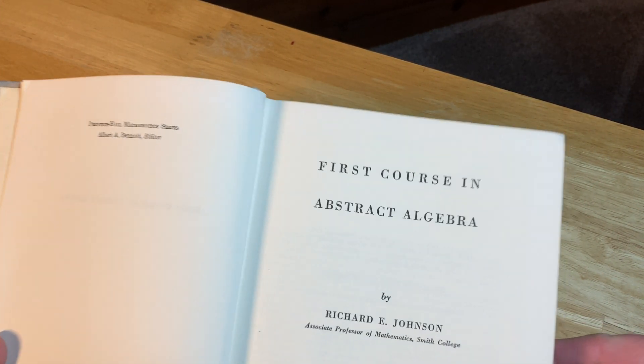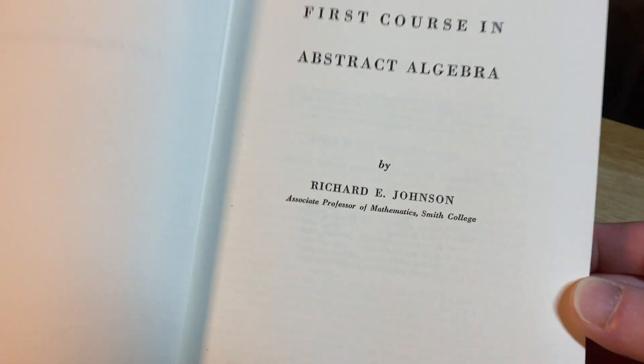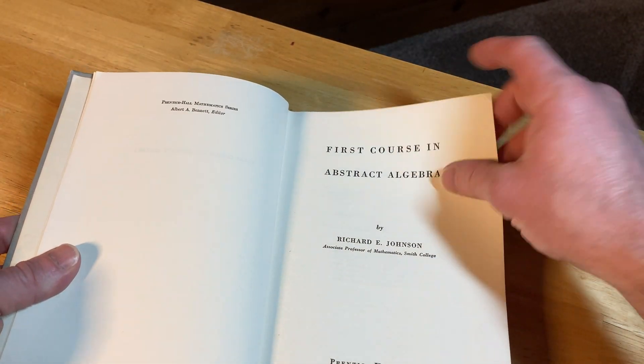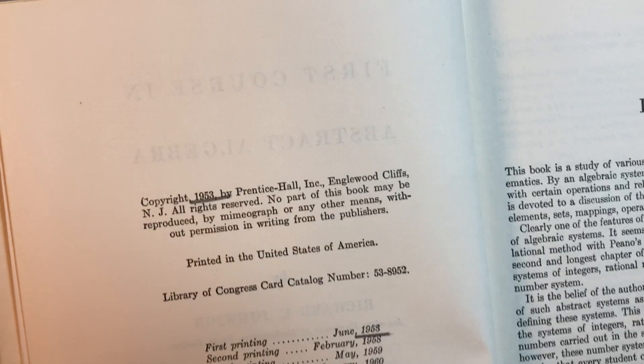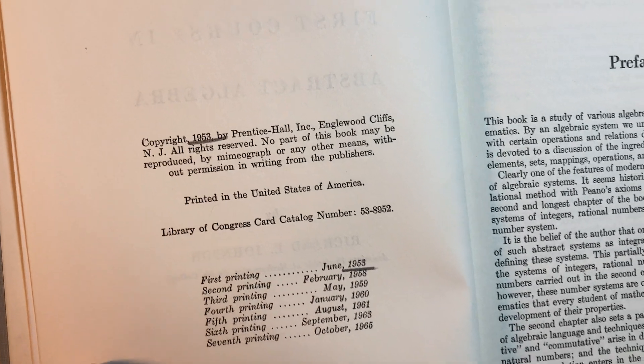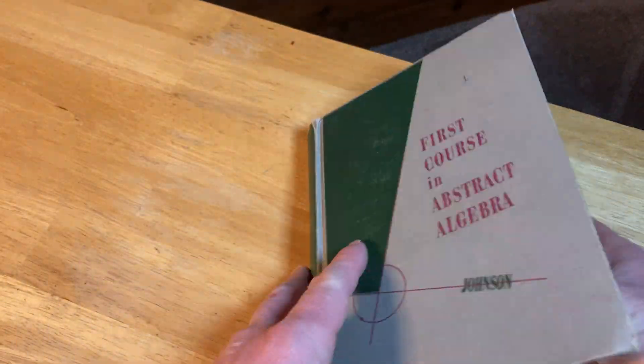A First Course in Abstract Algebra by Richard E. Johnson. Here's the copyright. The first printing was in 53. Wow, this one is from 65. This is the seventh printing.